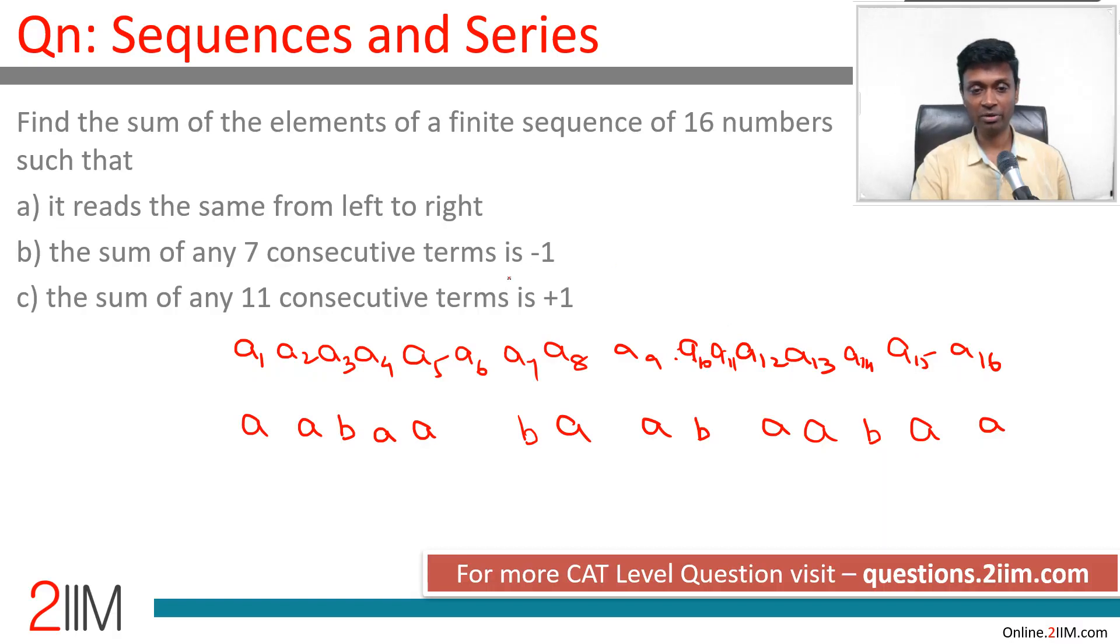a11 should be same as a4. a4 is a, a11 should be a. a6 and a11 should be same, this is also a. So our sequence is a, a, b, triple a, b, double a, b, triple a, b, double a. It has only a's and b's sitting inside. Only two numerical values in this sequence.